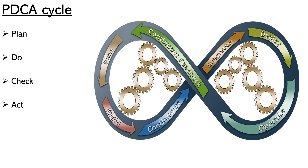The acting phase is where, once everything has been implemented and evaluated, you document all the results — before and after — and then move on to the next problem. That is what makes TQM a continuous, cyclic process.